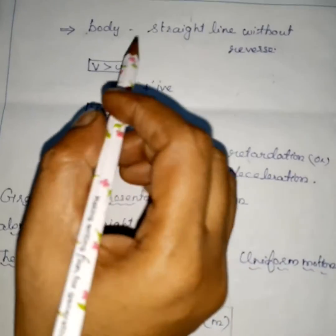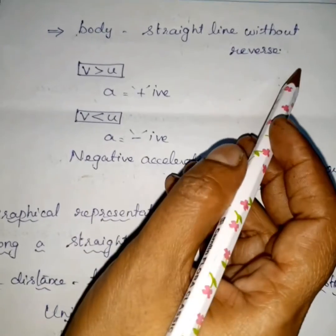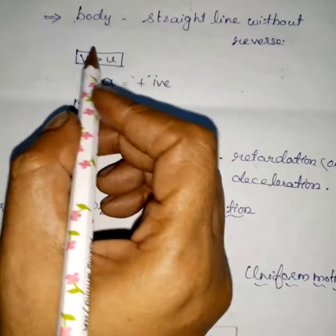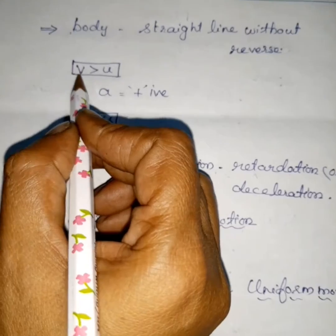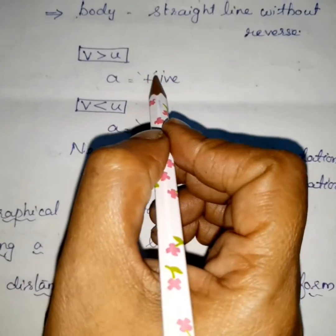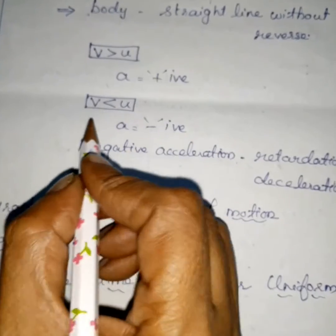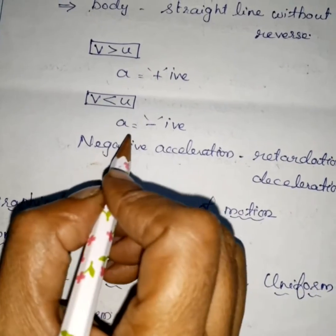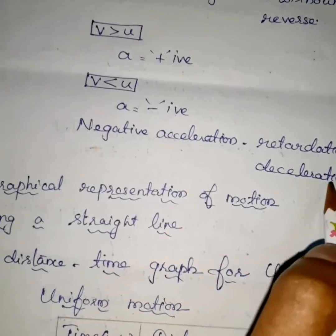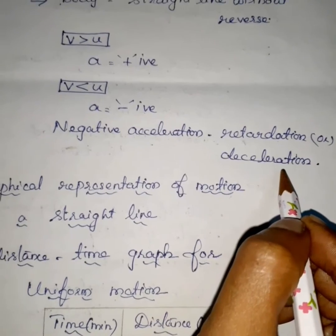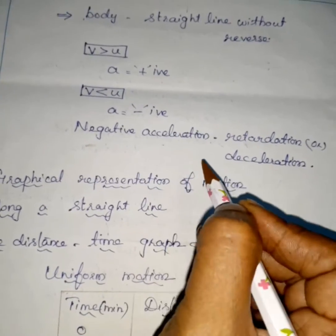Consider an object moving in a straight line without reversing direction. If the final velocity is greater than the initial velocity — that is V greater than U — the velocity increases with time and the acceleration is positive. If final velocity is less than U, the acceleration is negative, also called retardation or deceleration. Velocity decreasing with time is called negative acceleration.